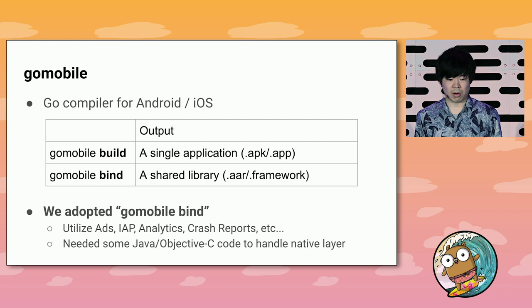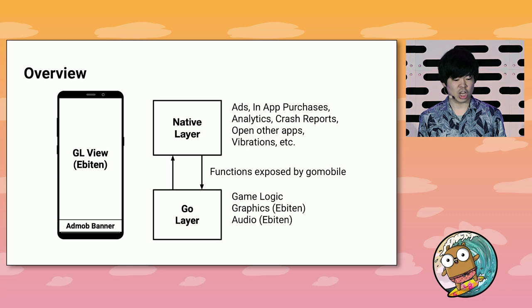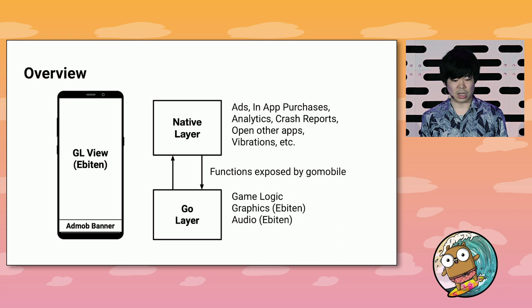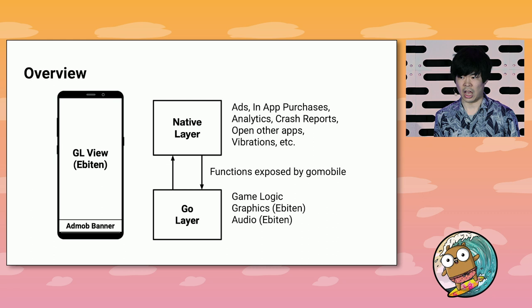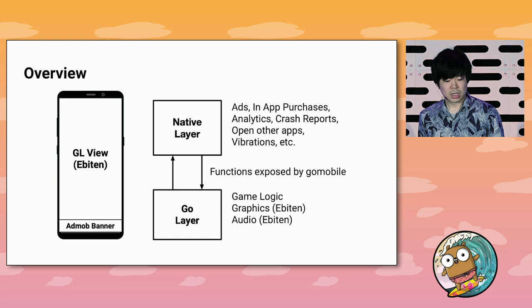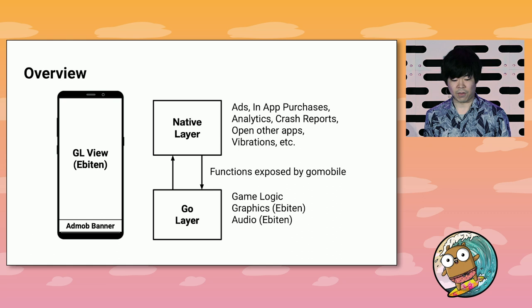This is the overview of our application. The application consists of two views: the GL view, which is managed by EBITEN, and an advertisement banner. Inside, the application consists of two layers. One is the native layer and the other is the Go layer. The native layer is written in Java or Objective-C and handles advertisements, in-app purchases, and other native APIs. The Go layer is written in pure Go, defines the game logic, and calls graphics and audio APIs defined in EBITEN. These two layers communicate via functions exposed by Go Mobile.